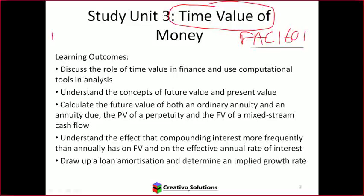There is another module that UNISA offers, which is DSC 1630. If you've done that one, it would make this section very easy, because the DSC takes it a lot further in terms of the calculations. The other DSC module — possibly 1520 — focuses more on the mathematics: algebra, straight lines, derivatives and calculus. DSC 1630 focuses on financial mathematics, and time value of money is a very big focus in that one.